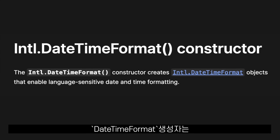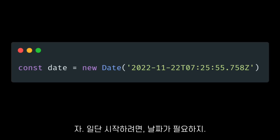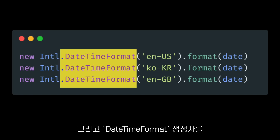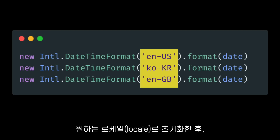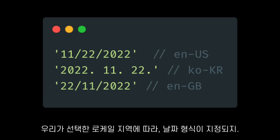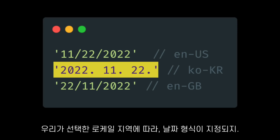The DateTimeFormat constructor helps us format date and time. To use it, first we need a date. Then we initialize the DateTimeFormat constructor with the locale that we want to format our date to, and then we call the format method with the date we created. That will format our date according to the locale that we chose.